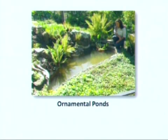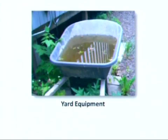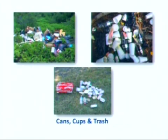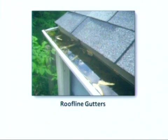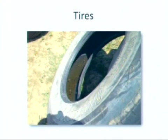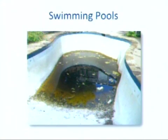The best way to prevent mosquito breeding is to eliminate the sources. Not all water is going to become stagnant, and not all standing water will breed mosquitoes. Water has to be in a very warm environment and very still in order to be a positive place for mosquitoes to breed. Some of those sources include ornamental ponds, birdbaths, yard equipment, various containers, trash cups and cans, especially roofline gutters clogged with leaves and debris, ditches, old tires, and swimming pools.